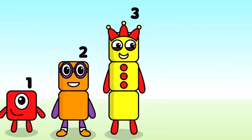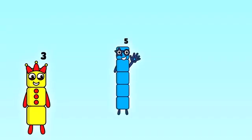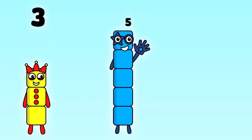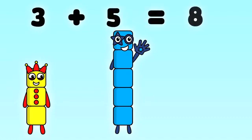The last two numbers for now are 3 and 5. 3 plus 5 equals 8.